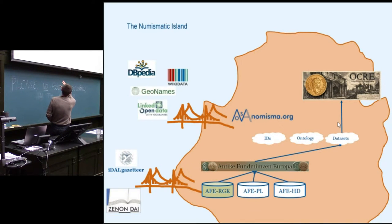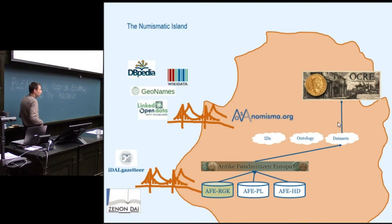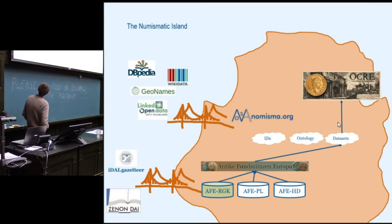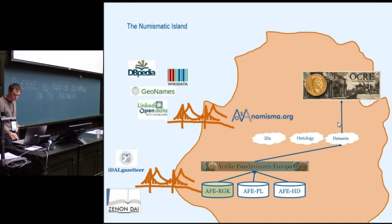For example, from the coin find information we have links to the Deutsches Archäologisches Institut — again for places, but also for bibliography and those things.